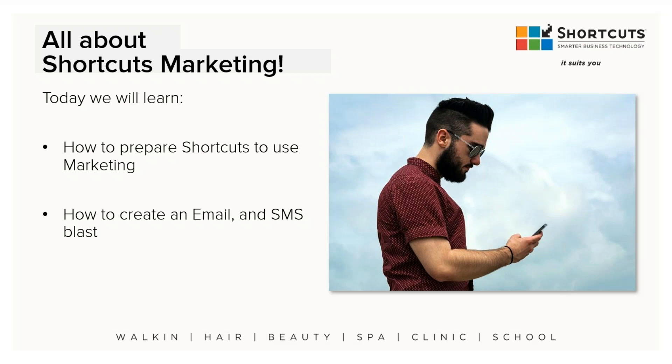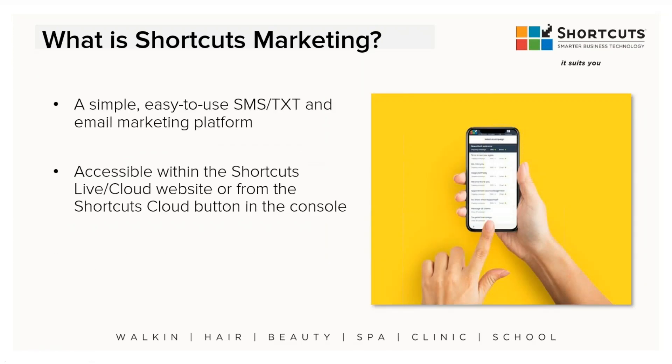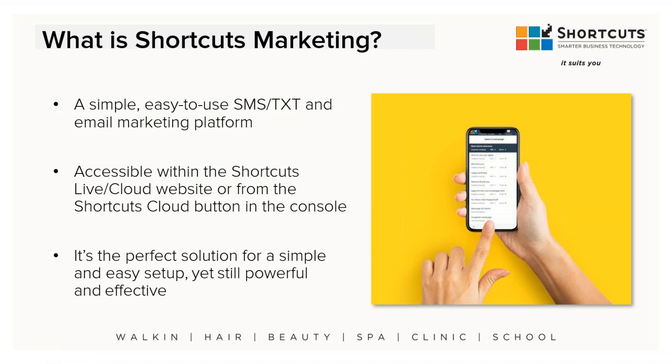In order to use marketing, you need to make sure your Shortcuts system is set up and able to use it. You do that by making sure you clean up your customer privacy and your customer list. Not only do you have the option to send Shortcuts email marketing, you can also use it to send text marketing. If you've signed up for confirmations through Shortcuts, you can dip into that confirmation allowance and send out a text blast to your customers.